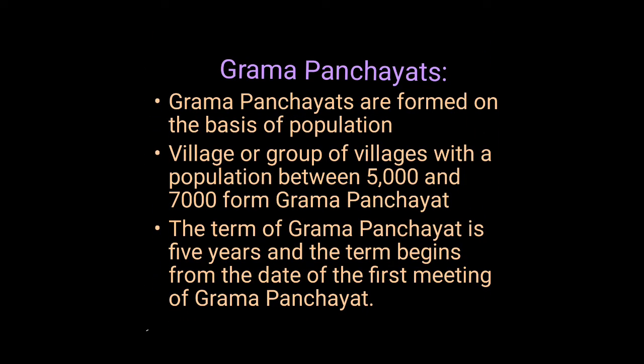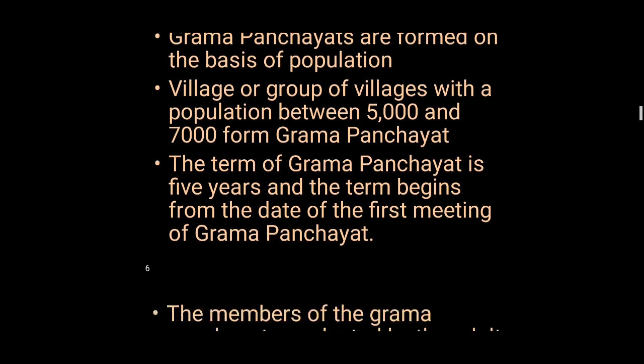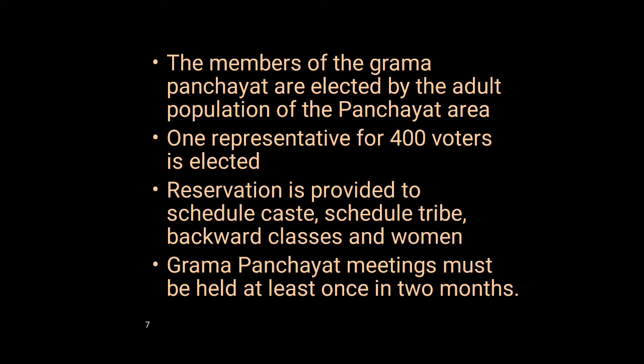Next, moving on to Grama Panchayats. Grama Panchayats are formed on the basis of population. A village or group of villages with a population between 5,000 and 7,000 forms a Grama Panchayat. The term of a Grama Panchayat is five years, beginning from the date of the first meeting. The members of the Grama Panchayat are elected by the adult population of the Panchayat area.